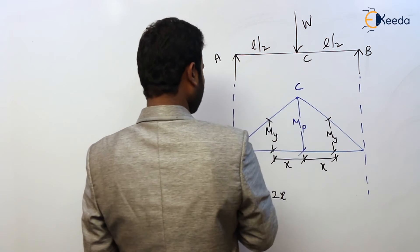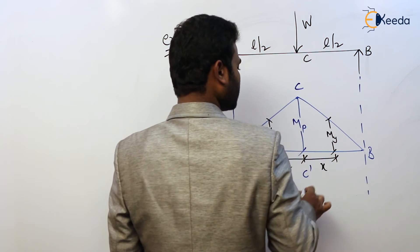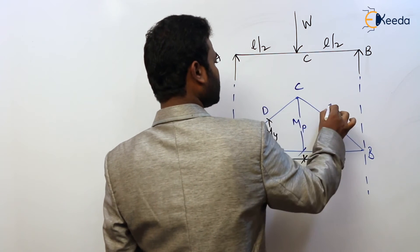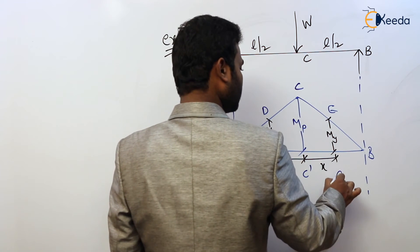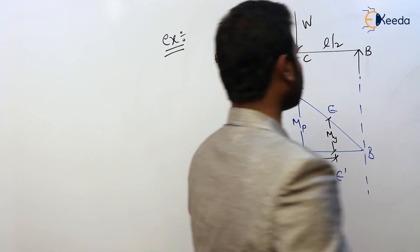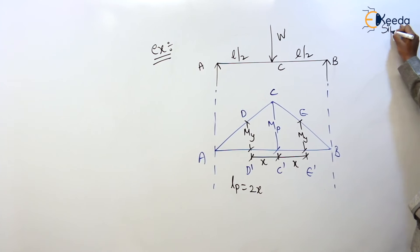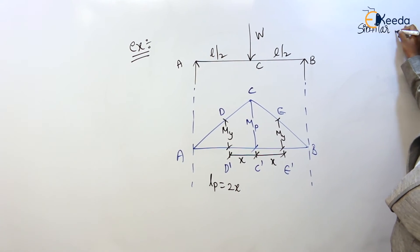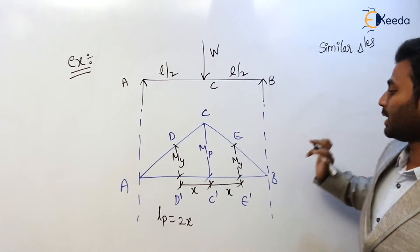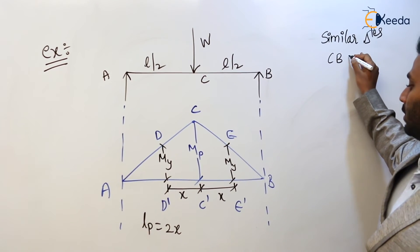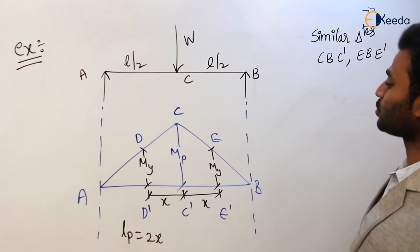Looking at the bending moment diagram, label the points: C and B on one side, and C dash, D, E and D dash, E dash on the other. Now consider the similar triangles concept — the two similar triangles are CBCdash and EBEdash.